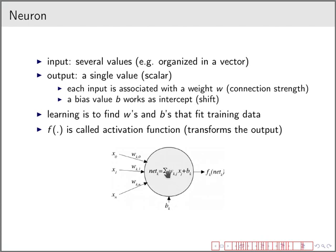As you probably note, we can write that in the form of a matrix W times x plus b. So we can use a matrix multiplication instead of an explicit sum here in this case. And learning is to find w's and b's that fit the training data. And b works as an intercept or a shift, while w defines the scale. There is also, on top of that, on top of the w x plus b, we have a function f that's applied over that, that transforms the output.